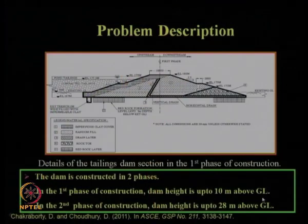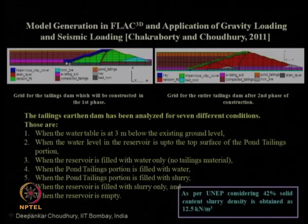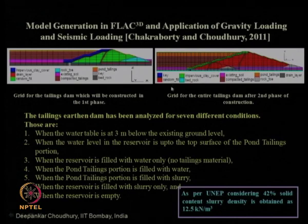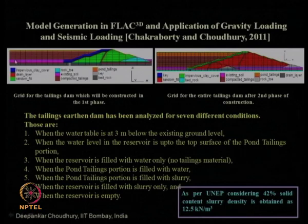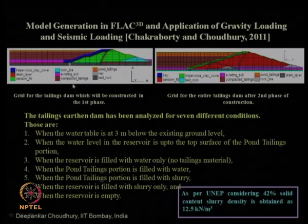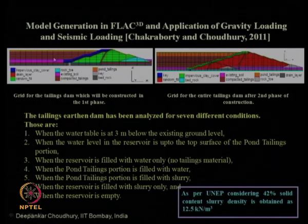The FLAC 3D modeling and meshing are shown with grid lines. First, gravity loading (static stability) was analyzed. For a tailing dam — unlike a regular earthen dam — seven different loading conditions are possible: (1) water table 3 m below existing ground level (fully dry); (2) water table in the reservoir up to the top surface of the tailing pond; (3) reservoir filled with water only; (4) pond tailing portion filled with fresh water only.